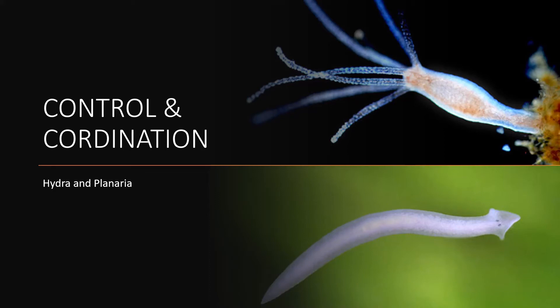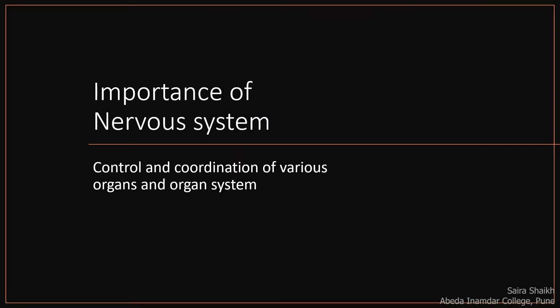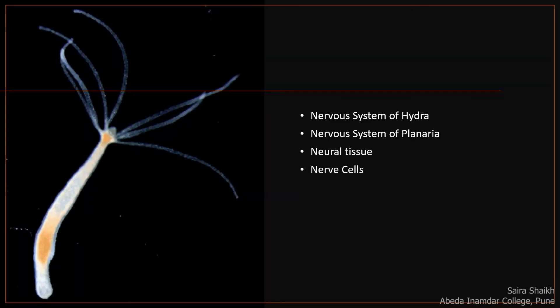Hello everyone. Welcome to Biology Class 12, Straightboard, new syllabus. Chapter number 9: Control and Coordination. In this chapter, we will study about the development of the nervous system in different animal groups and the details of the nervous system of the human being. In this video lecture, we will study about the nervous system of hydra and the planaria, as well as neural tissue.